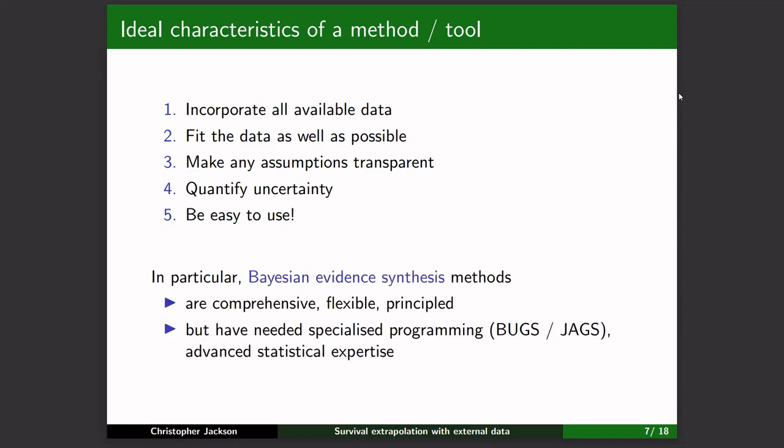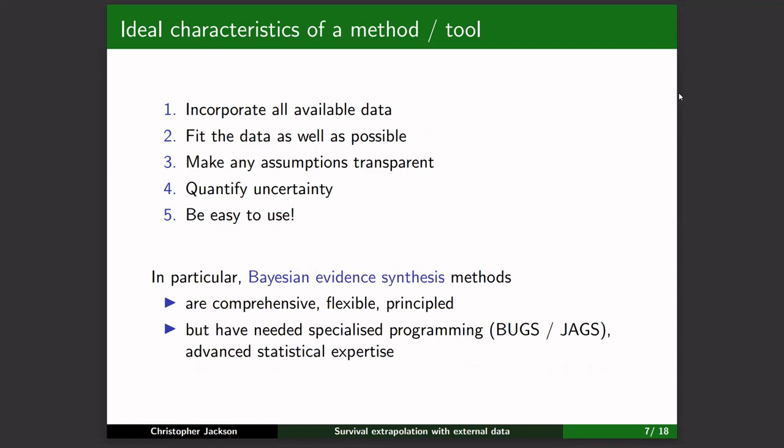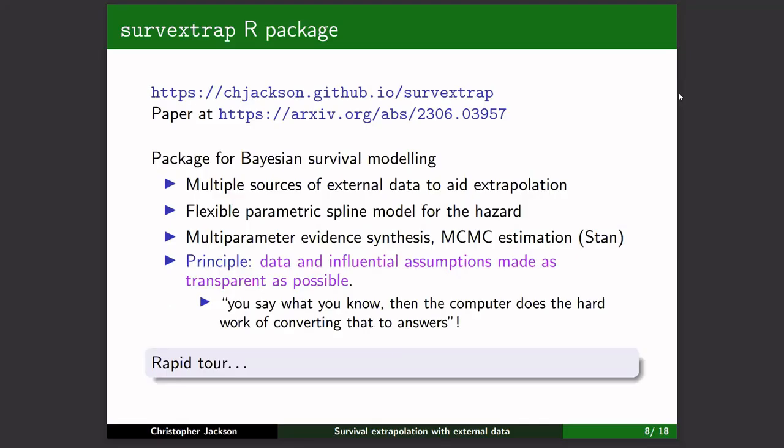The methods which are nicest from a review are those based on Bayesian multi-parameter evidence synthesis, because they quantify uncertainty and can be made flexible to fit the data. Their traditional weak point has been that they're fairly advanced — they require specialized programming expertise in Bayesian software such as BUGS, JAGS, and STAN, plus statistical skills. My goal with this package is to break down that barrier, make it easy to use, and make your assumptions transparent.